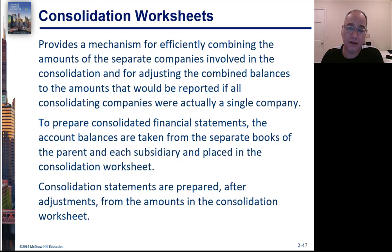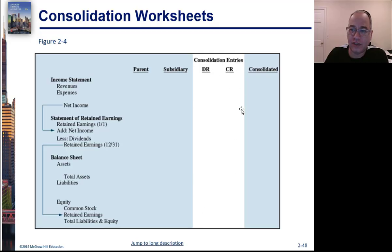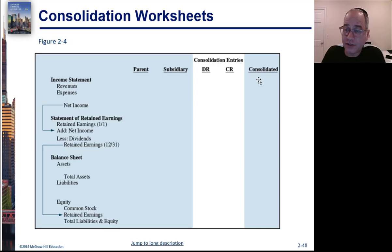We use the numbers from this worksheet to prepare our financial statements. It follows a format where we have one column for the parent, one for the subsidiary, our elimination entries as debits and credits, and then it all adds or subtracts together into the consolidated financial statements.